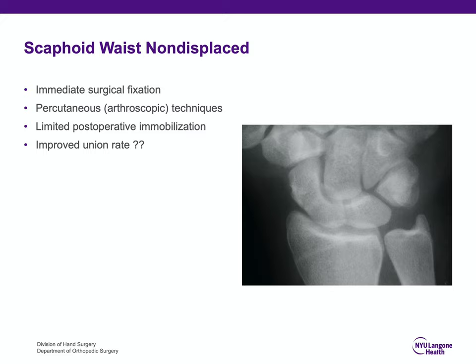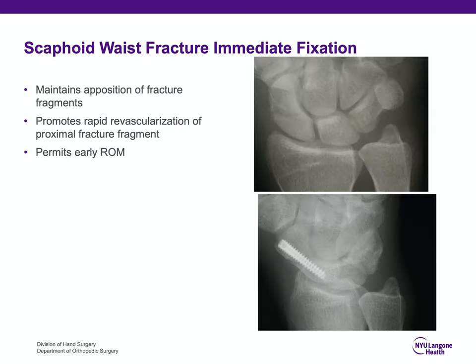Because of the time to heal of 8 to 12 weeks and a small percent of patients who may never heal, there has been a recent trend towards immediate surgical fixation of non-displaced scaphoid waist fractures. This can be done percutaneously, with small incisions, or sometimes arthroscopically, with one benefit being limited postoperative immobilization. When patients have immediate surgical fixation, it maintains apposition of the fracture fragments, theoretically promotes rapid revascularization of the proximal fragment, and permits early range of motion.